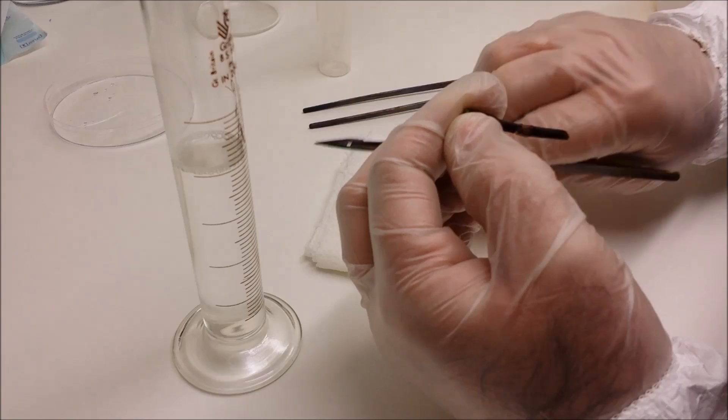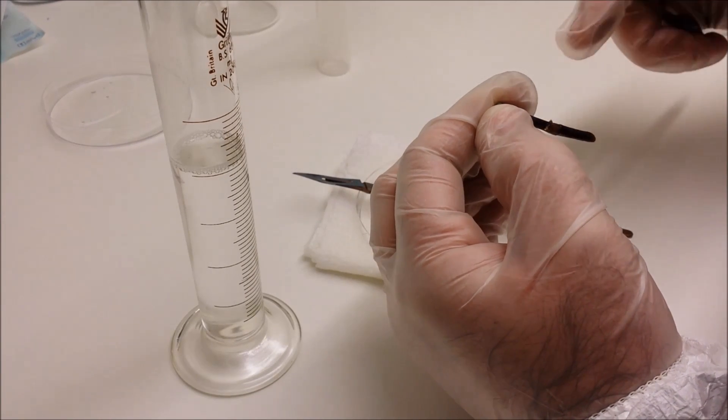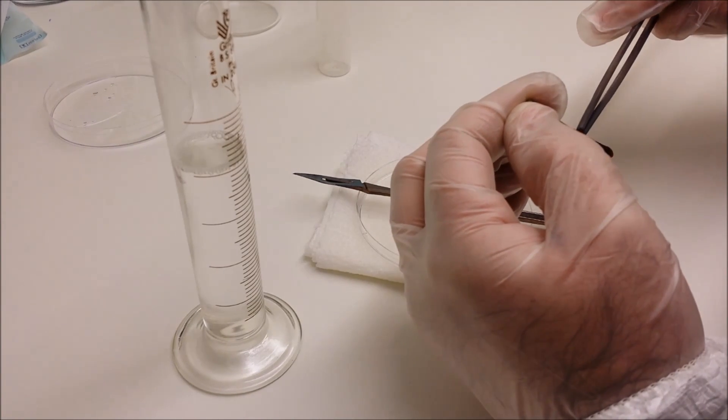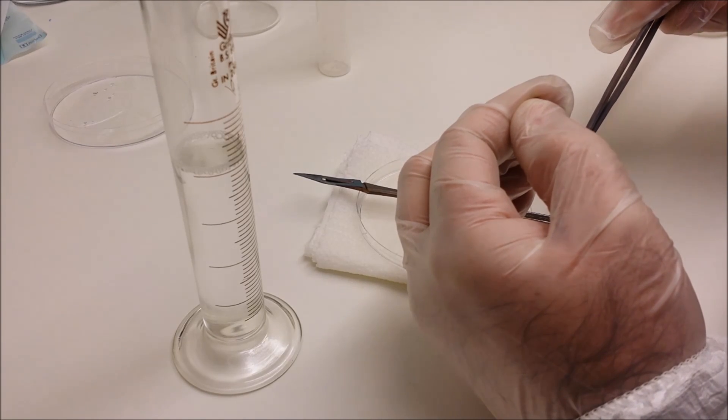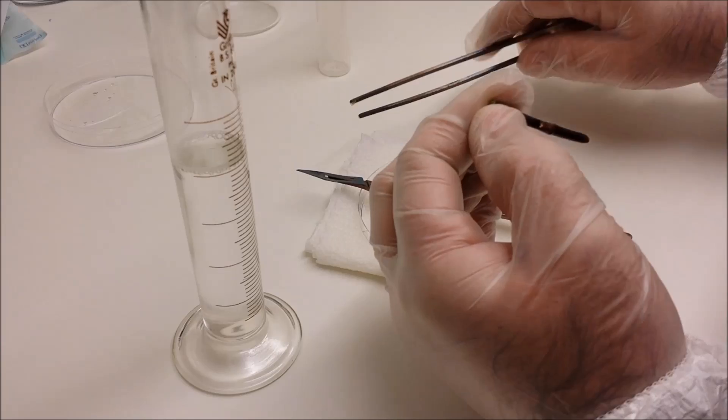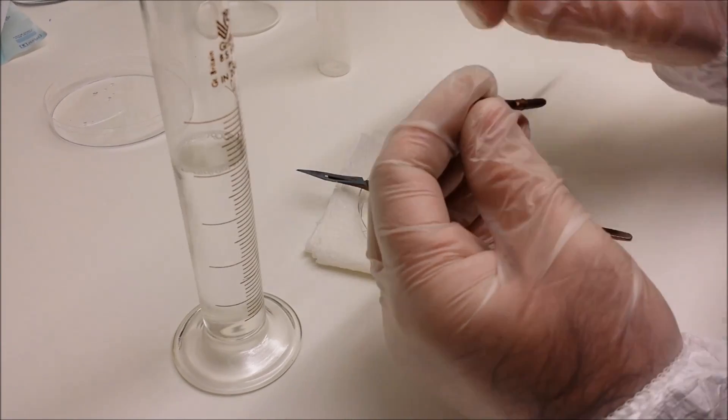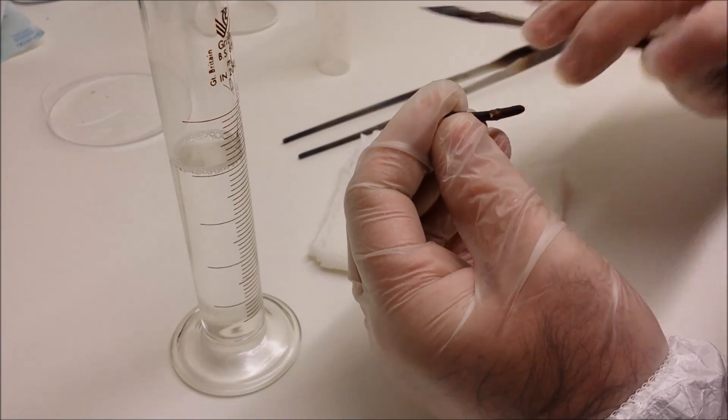So carefully peel back the sheath without disturbing the bud underneath, and here I'm using tweezers just to prise off the loose bits.